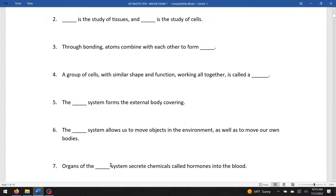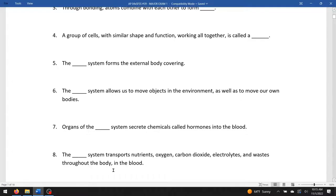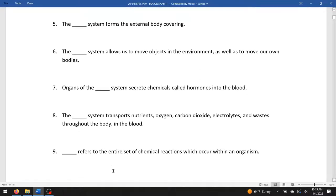Organs of the blank system secrete chemicals called hormones. That should be a giveaway. Immediately, you're talking the endocrine system. The blank system transports nutrients, oxygen, carbon dioxide, electrolytes, wastes throughout the body in the blood. That would be the CV system or the cardiovascular system. Blank refers to the entire set of chemical reactions which occur within an organism. Metabolism.